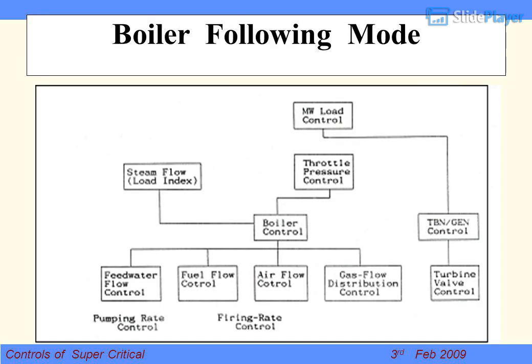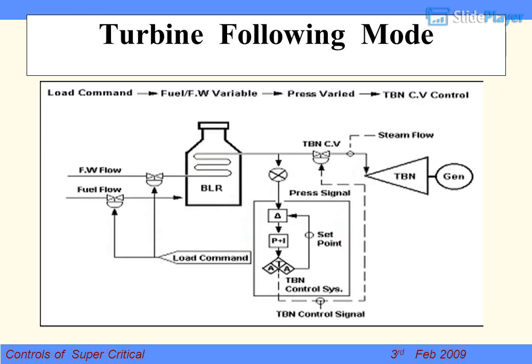Now we have to meet the load demand, so we can follow certain strategies. There are different modes. In Boiler Following mode, whenever generation load is increased, the turbine CV will open first, then pressure will drop, so feed water and fuel have to increase to meet MW demand. Load following capacity will be fast in this case. In Turbine Following mode, whenever load is increased, the load demand is given first to increase fuel and feed water, then based on pressure change, load will be changed, so load following will be slow.